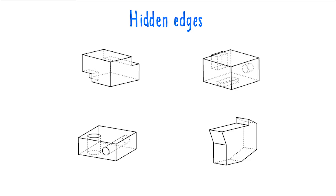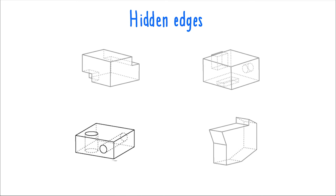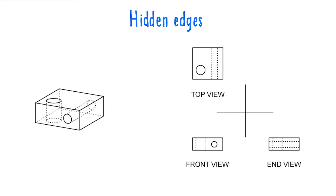In this third object, we see that dotted lines can actually intersect. This can happen if an object has two holes that go through it in different directions. Notice how the front and top views show the openings for cylindrical holes. In the end view, the lengths of both holes are depicted by dotted lines, since the tunnels made by the holes are hidden from view. The orientation of each hole must match in all three views.